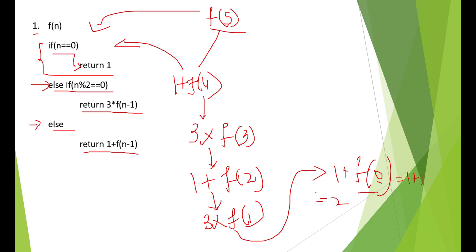You are going to return 2. So f of 1 is 2. What this happens is 3 into 2, which is nothing but 6. So f of 1 value will be 6.